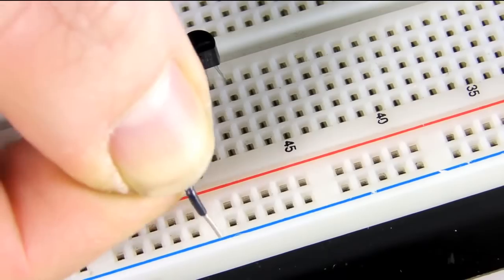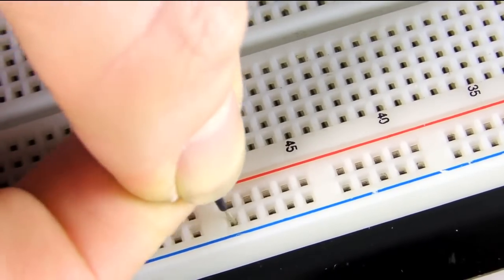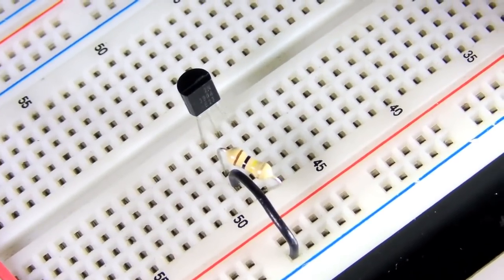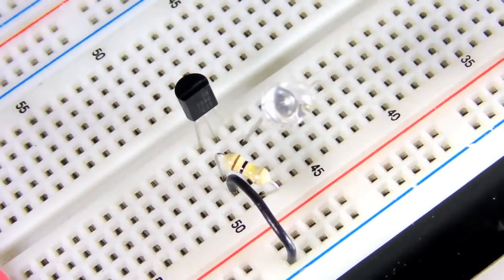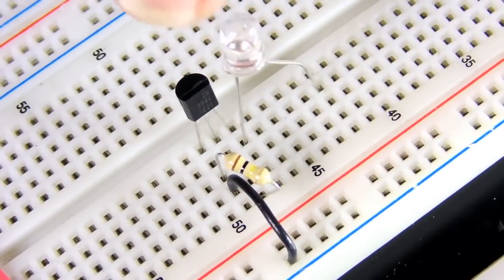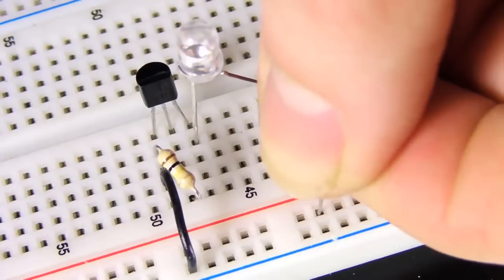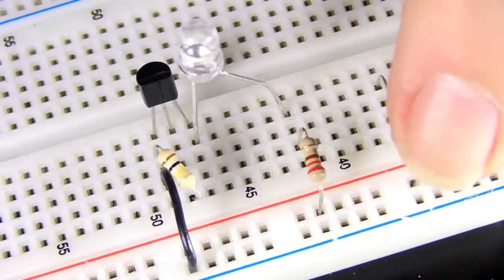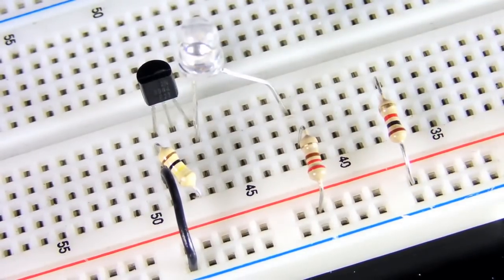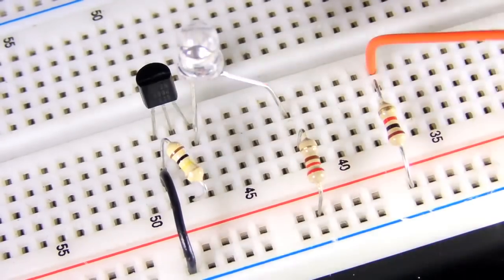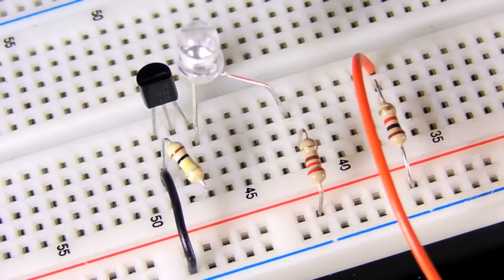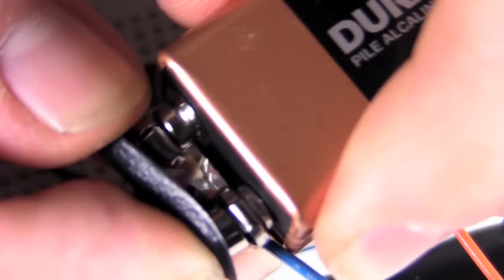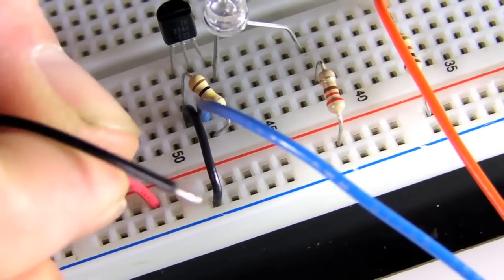Anyway, follow along with the schematic and make all the connections as it specifies. Be sure to connect the LED's shorter lead to the collector of the transistor, the third pin. Hook up a couple of longer wires to act as your probes. Connect your 9 volt to the breadboard's power rails and you're good to go.